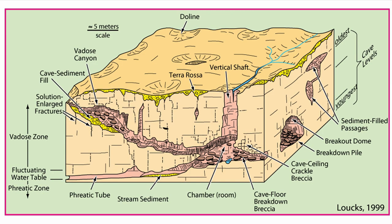Karstic landscapes have characteristic features. For instance, we have dolins, which are depressions at the surface — an expression of dissolution in the subsurface. In some cases, you can have a dolin right on top of a shaft that has not yet collapsed, which is quite dangerous. We can have vertical shafts, which are dissolution along vertical fractures, or galleries that follow more or less bedding. Large chambers and caves can form through the process of collapse of blocks and dissolution of the limestone at the bottom, with rivers running through these passages.